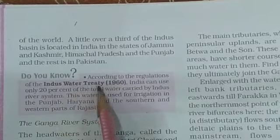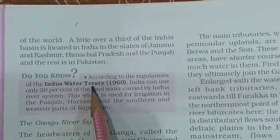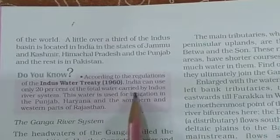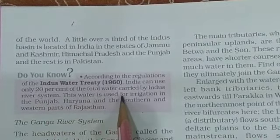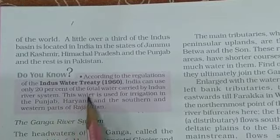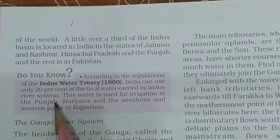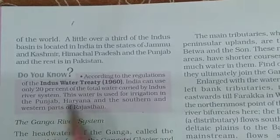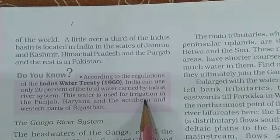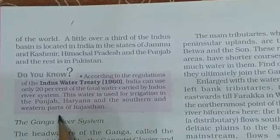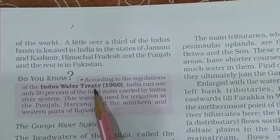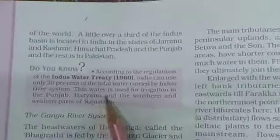According to the regulations of the Indus Water Treaty of 1960, India can use only 20% of the total water carried by the Indus river system. This water is used for irrigation in Punjab, Haryana, and the southern and western parts of Rajasthan. The remaining 80% goes to Pakistan as per the treaty.